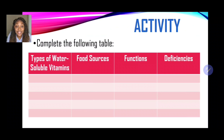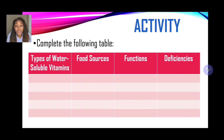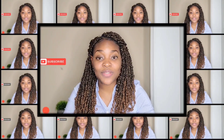Now it's time for your activity. Complete the following table. In the first column, we have types of water-soluble vitamins. We have looked at the different types of B vitamins — the B group or B complex — and also vitamin C, including their scientific names, food sources, functions, and deficiencies. You should be able to ace this table. You are awesome — you've made it to the end of the video. Don't forget to like, subscribe, and share with persons who will find this information useful. Thank you for watching various tutorials.